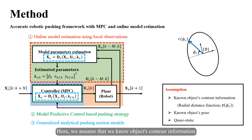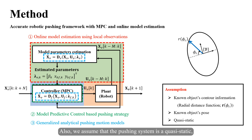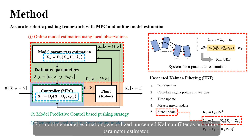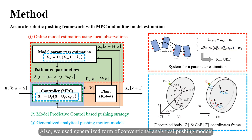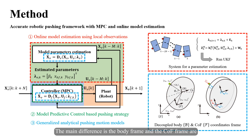We assumed that we know objects' contour information and can track objects' pose at each time step. Also, we assumed that the pushing system is quasi-static, meaning we can neglect inertial effects. For online model estimation, we utilized an unscented Kalman filter as an online parameter estimator, using previous M observations to estimate the optimal model parameters. We used a generalized form of conventional analytical pushing motion models in both model parameter estimation and MPC. The key difference is that the body frame and the center of friction frame are decoupled to accurately describe real-world objects' local behavior.